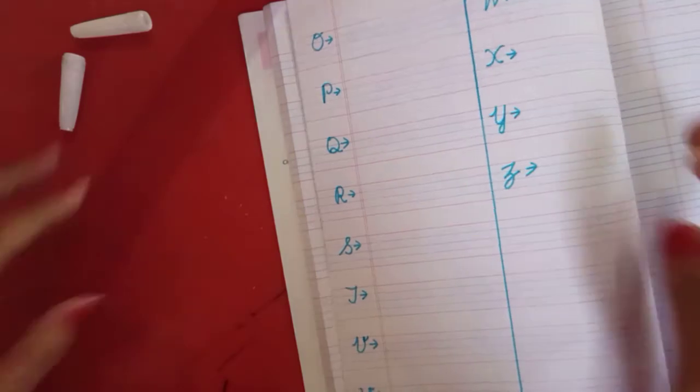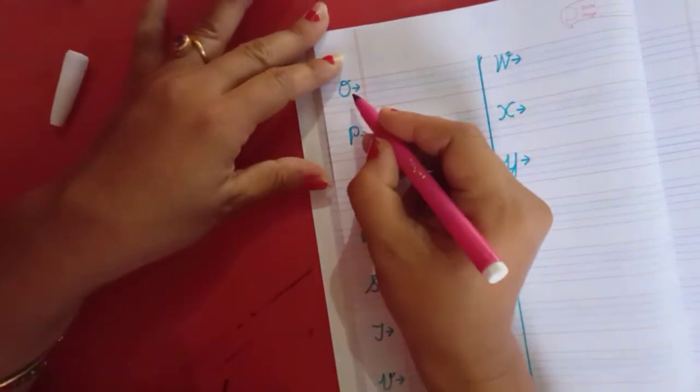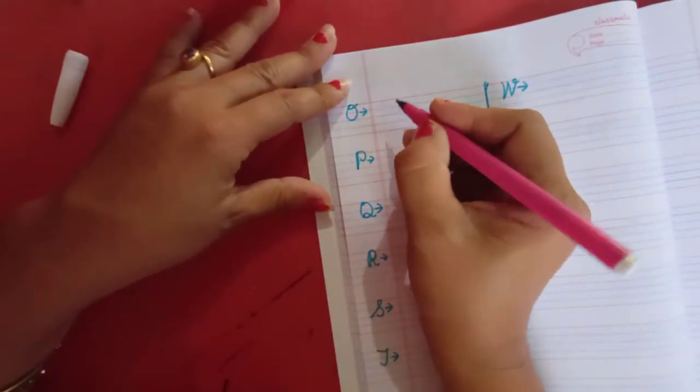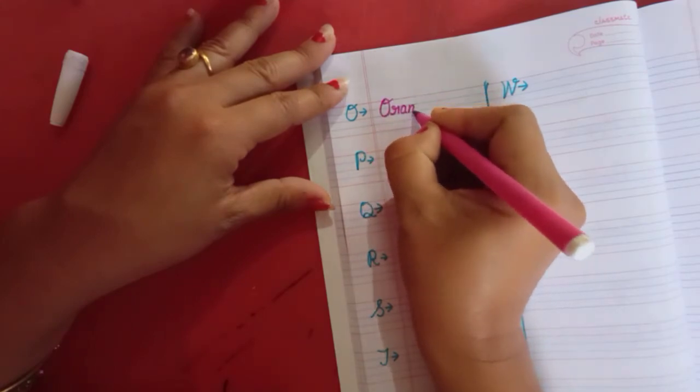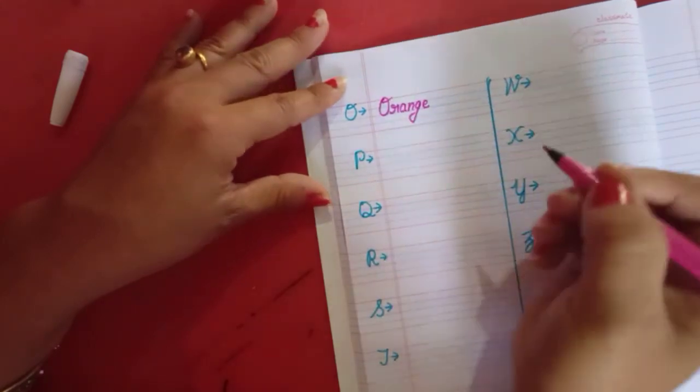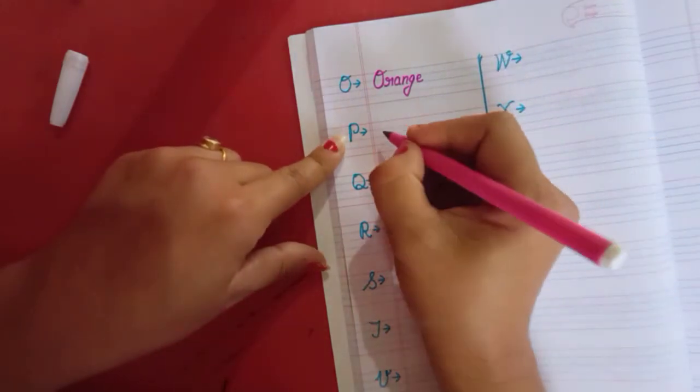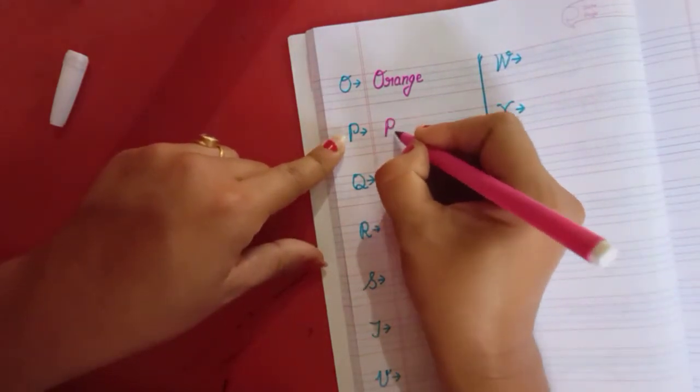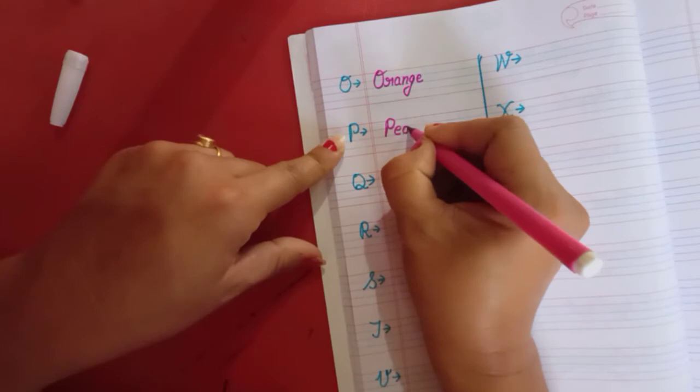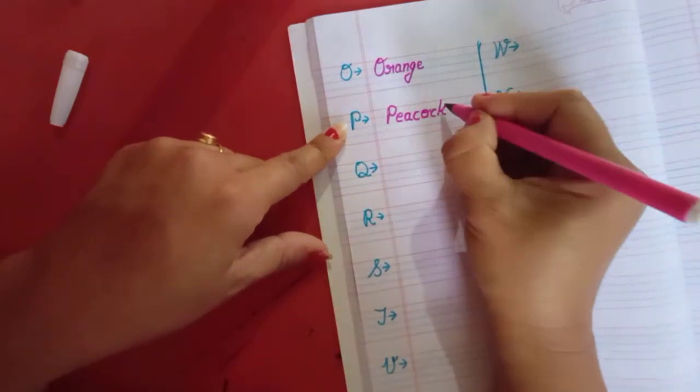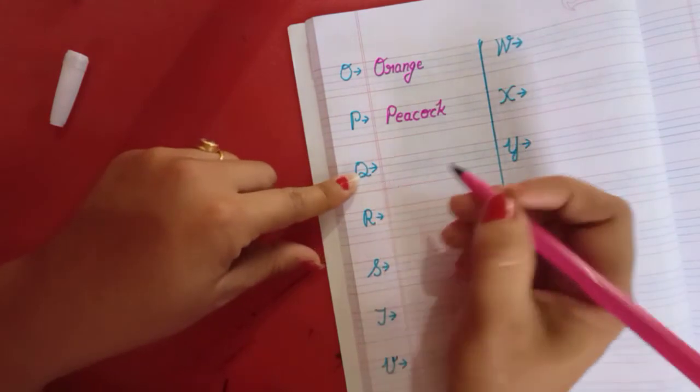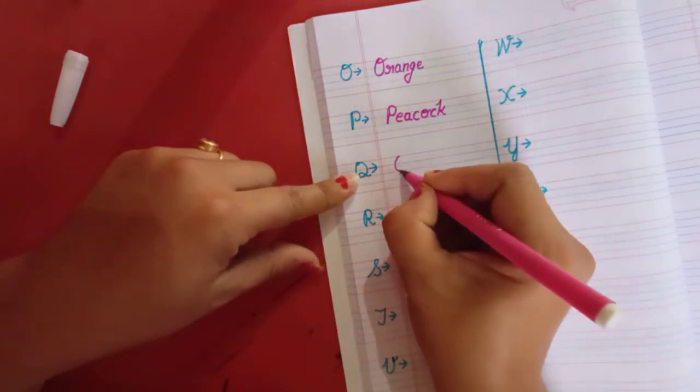Next letter is letter O. O for orange. O R A N G E orange. P for peacock, parrot, pineapple. P E A C O C K peacock. Next one is Q. Q for queen. Q U double E N queen.